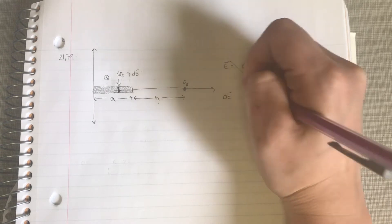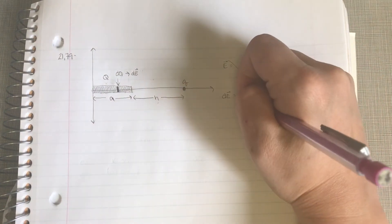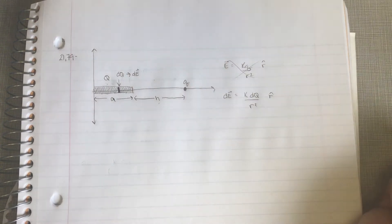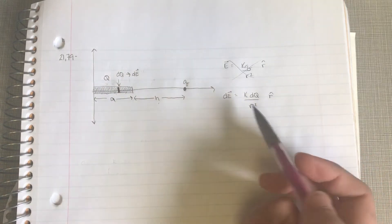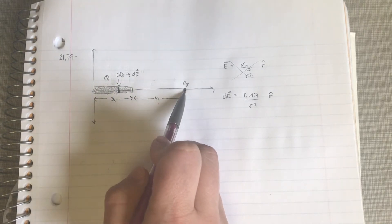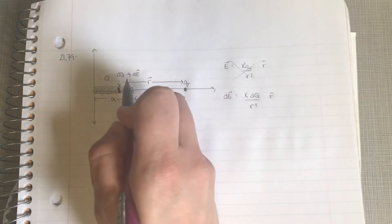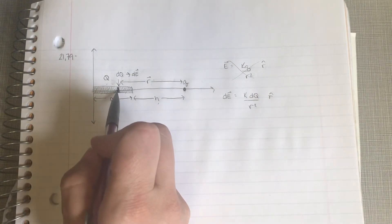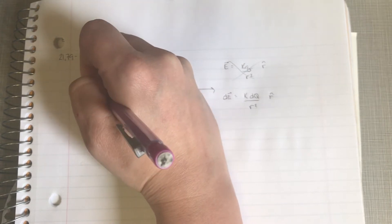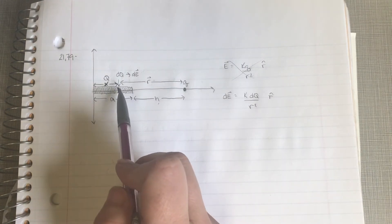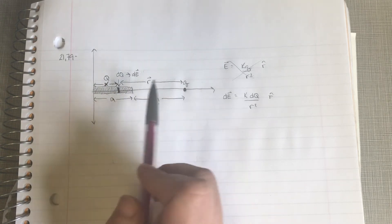The electric field due to our teeny tiny little slice is going to be k times dq over r squared r-hat. Now we need to figure out what our r vector is — this is why I chose h instead of following the book and calling it r. The vector r points from our slice to the area that we care about. If our little slice is on the x-axis at some position x, then this distance r is how far away the point of interest is from our slice.